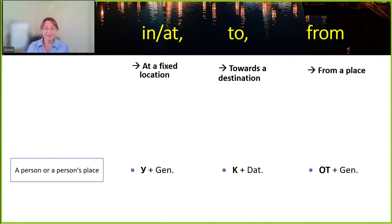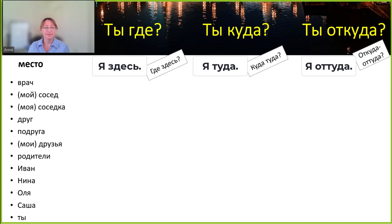And finally here is the set of vocabulary items for our third category, a person or person's place: Врач, сосед, соседка, друг, подруга, друзья, родители, Иван, Нина, Оля, Саша, ты.